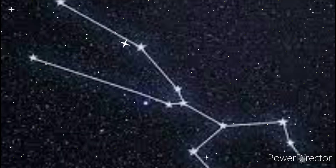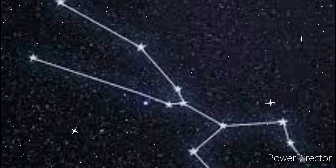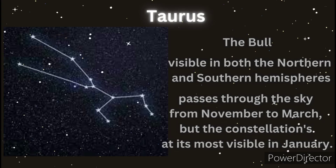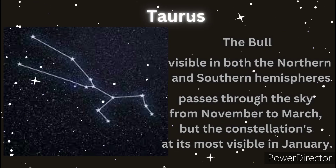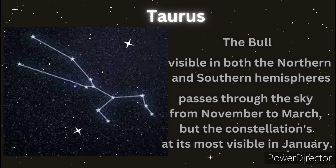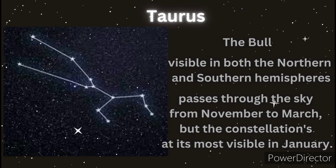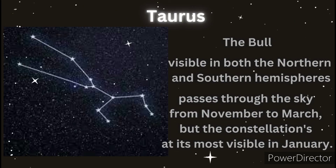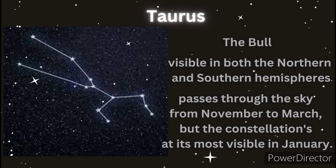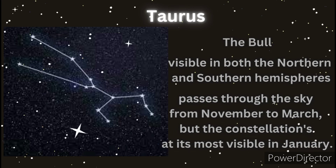The next one — what do you see? It looks like a bull, so it is Taurus, also known as the Bull. It is visible in both the northern and southern hemispheres and passes through the sky from November to March, with the constellation at its most visible in January. It is a large and prominent constellation in the northern hemisphere winter sky, and is used by Matigsalog Manobo of Bukidnon to determine the clearing of forests.